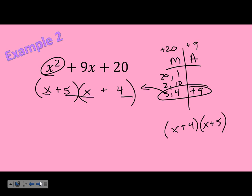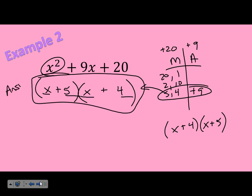Would it be okay if I wrote it as x plus 4 times x plus 5? Yes, because of the commutative property. It doesn't matter which order you multiply — you'll get the same thing. As long as you have a positive 4 and a positive 5, commutative property says it doesn't matter which order you multiply.